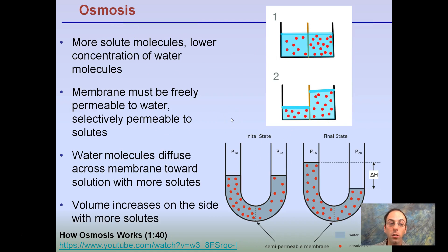Osmosis, again, that movement of water in this case for biological systems. More solute molecules, lower concentration of water molecules. The membrane must be permeable to water and selectively permeable to the solutes. In this case, the solutes can't move, but the water can. Water molecules diffuse across the membrane towards the solution with more solutes. The volume increases on the side with more solutes. We see here, here's some more solutes, here's less. Water is going to move across because, in this case, the dissolved salt cannot. We see an increase in the height of water in this tube versus this side. Same thing here. We have more molecules on this side. And over time, we get to part two, more water moves across.